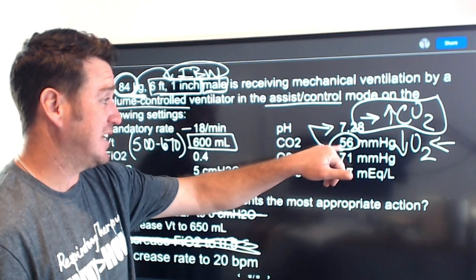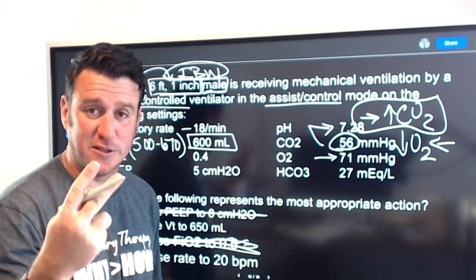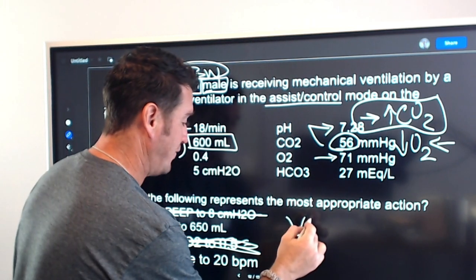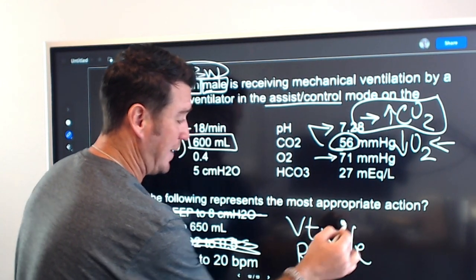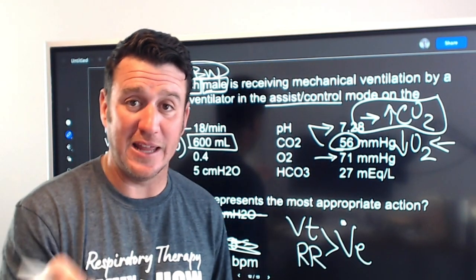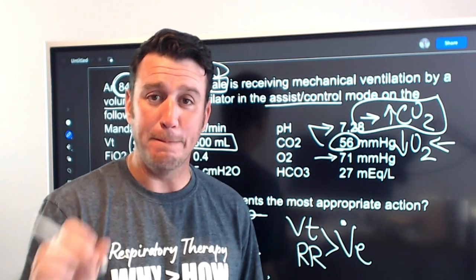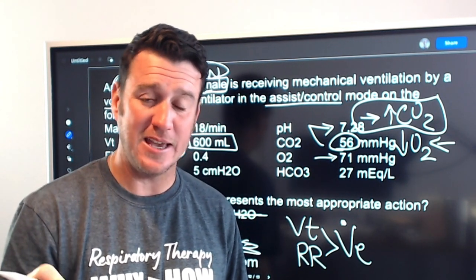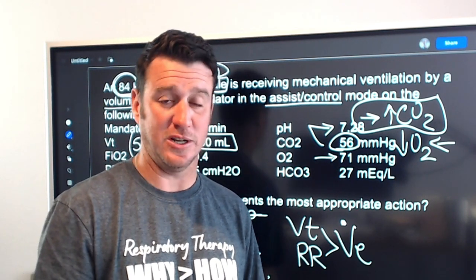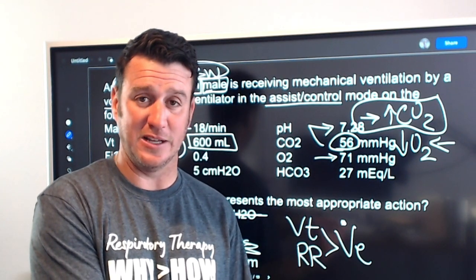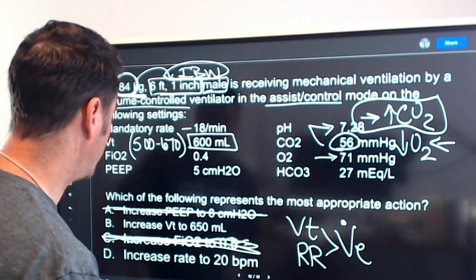We need to get the CO2 down to bring the pH back up. There are two ways to fix ventilation: tidal volume and respiratory rate. These two work together to establish minute ventilation. Minute ventilation is the key when attempting to fix CO2 — I'll say that again: minute ventilation is the key when attempting to fix CO2. We need to increase minute ventilation to get the CO2 down and the pH back up.